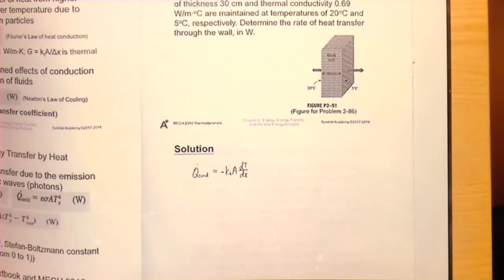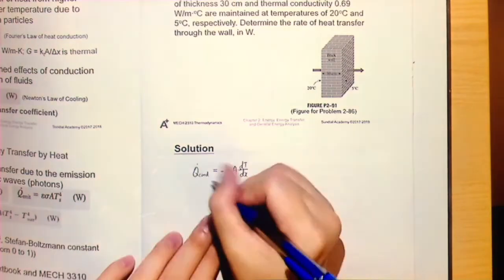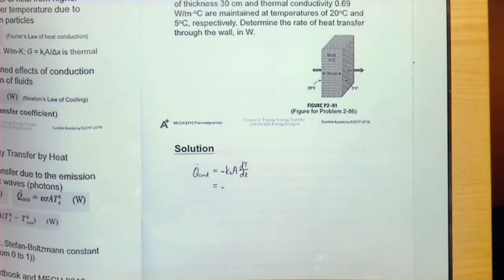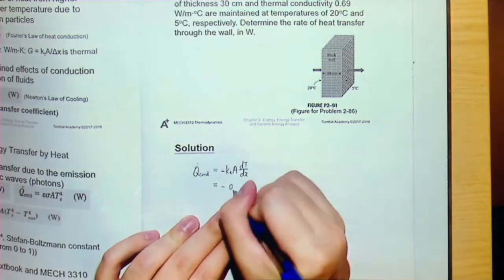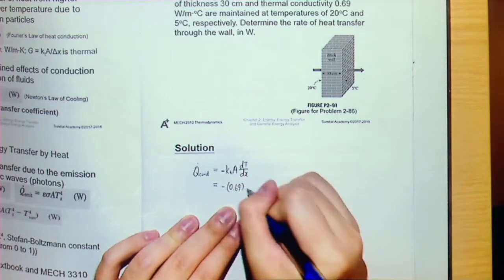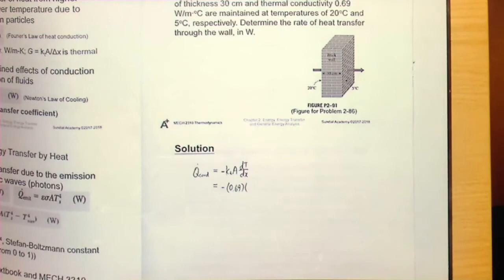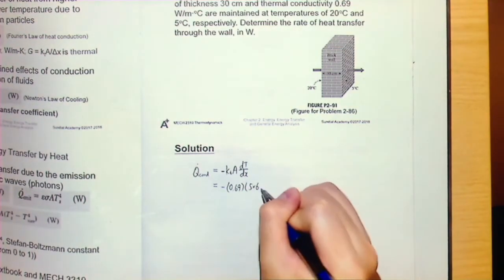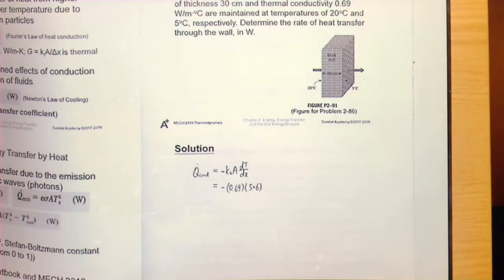But it's time to take note about the substitution of the values. We have the thermal conductivity that will be 0.69, times A, that would be 5m times 6m, so 5 times 6. Well, it's time to note how to substitute dT as well as dx.